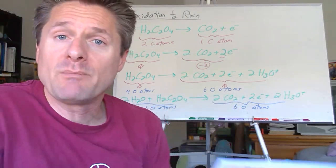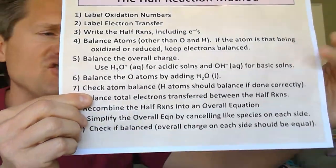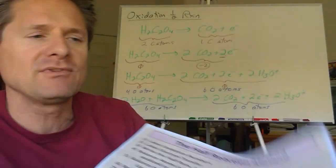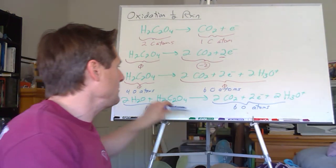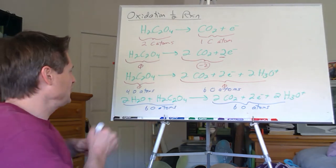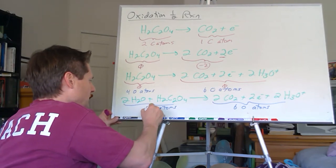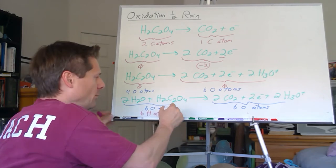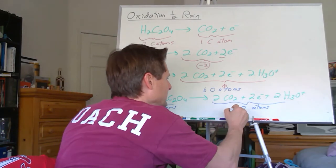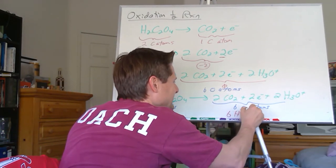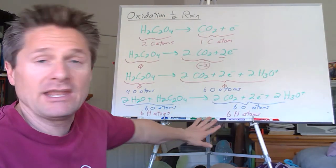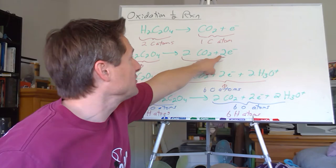Let's do step seven: check the hydrogen atoms. If we did it right, those should match. How many hydrogens? Two times two is four plus two — that's six hydrogen atoms on the left. There are no hydrogens in CO2. Two times three is six from the hydroniums on the right. Six equals six — yes! And if those didn't equal each other, go back — you probably forgot to adjust your electrons because carbon is the actual species being oxidized.